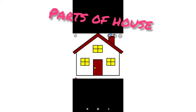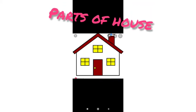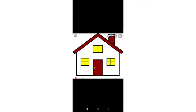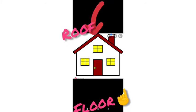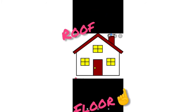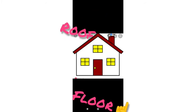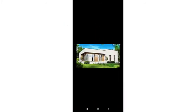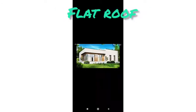Now let's talk about the parts of a house. A house has many rooms and each room has its own use. Each room has a roof on top and a floor at the bottom. Each room also has walls on all sides. A house also has many doors and windows.